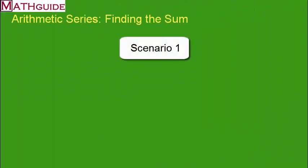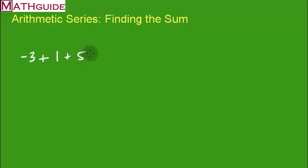This is going to be scenario number one. Let's take a look at a series. So, let's say we had this series: -3, 1, 5, 9, dot dot dot, and our last term is 65.